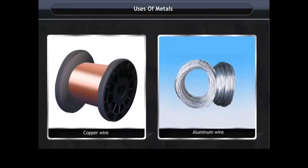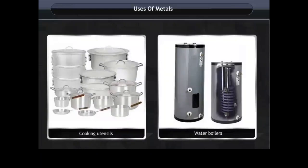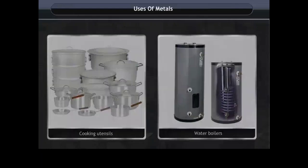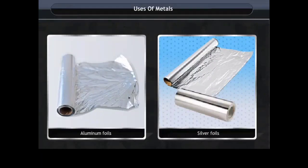Also, they are very ductile. Copper and aluminum wires are widely used in electrical fittings in houses. Metals such as iron, copper, and aluminum are good conductors of heat, hence they are used for making cooking utensils and water boilers.